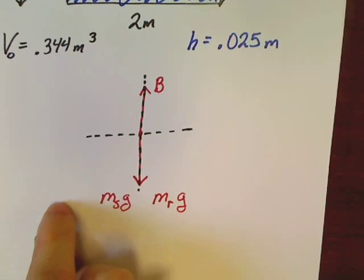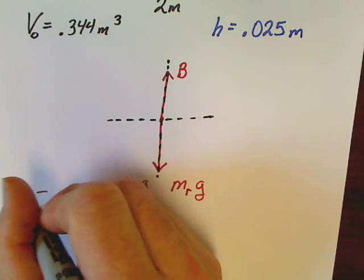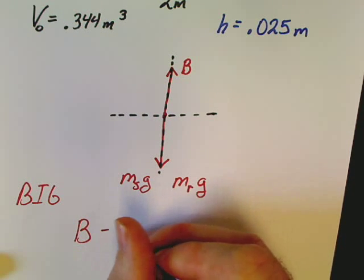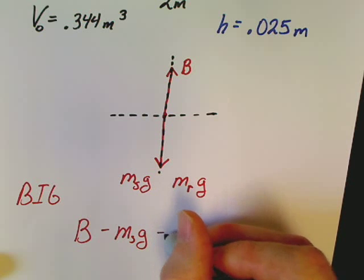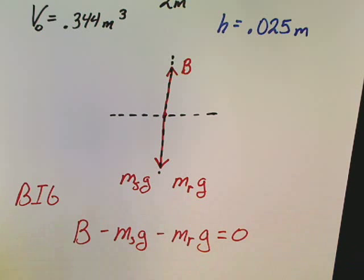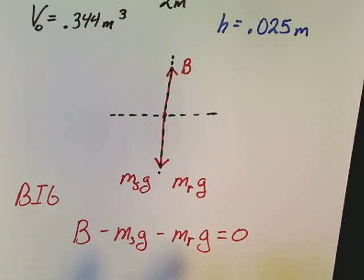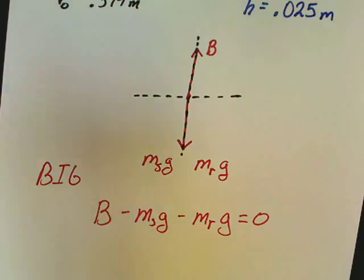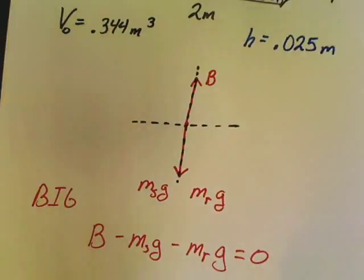My big equation would be B minus mass survivor g minus mass of raft g equals zero. I don't even know if I'm going to use this in this problem yet, but that would be my big equation for the problem. So all it said in part one was draw a diagram. We have successfully drawn a diagram.